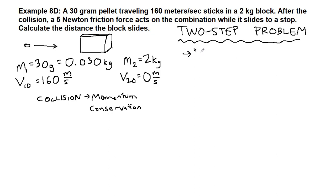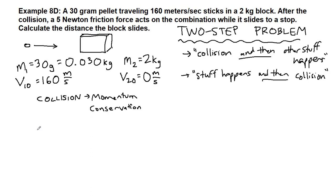The first possibility is that stuff collides, collision, and then other stuff happens. And that's what this example is. Or there could be stuff that happens and then collision. What's important for us to recognize in both of these cases is that the end of step one becomes the start of step two.